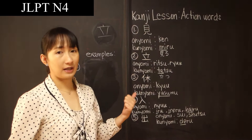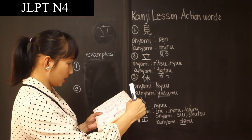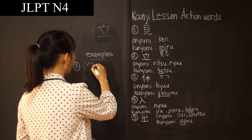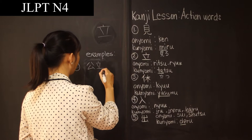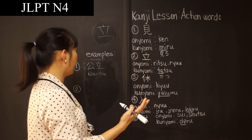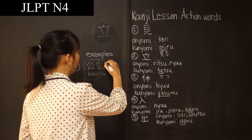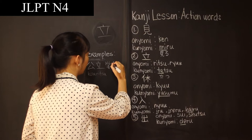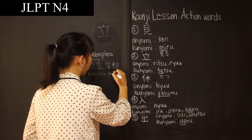The examples that I have for you are Koritsu. Koritsu means public — Ko, Koen no Ko, and then Ritsu. Koritsu means public. If I want to say public school, it's Koritsu Ga Ko, which means public school.